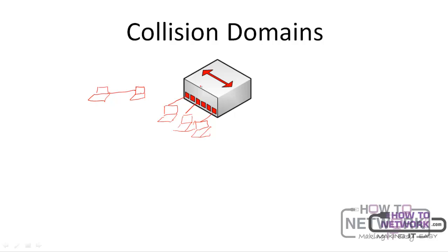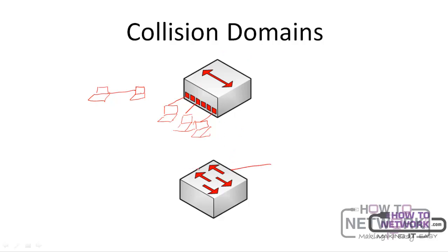In order to fix that problem, bridges and switches were invented. In a switch, every single port is a different collision domain. So if you have one computer connected to a switch, then another computer, and another computer, all the different ports on that switch are different collision domains. You can send messages to different ports without any collision happening. What a switch does is it segments a collision domain — another definition of a switch is a device that segments collision domains.